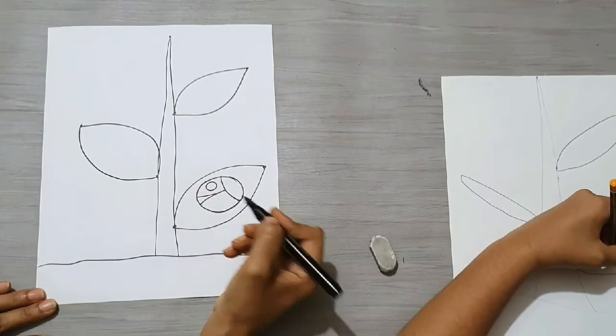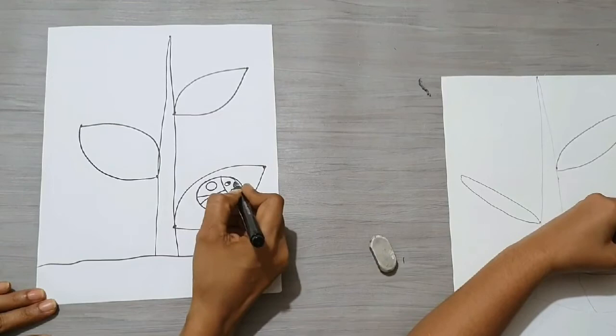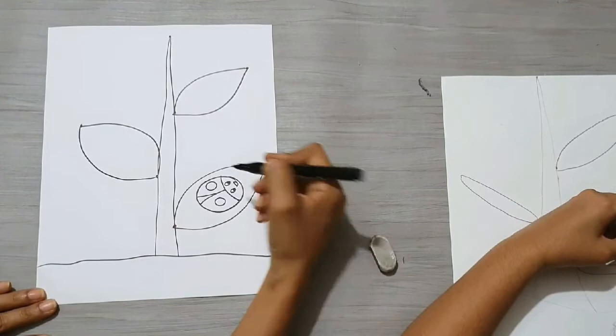Now draw the dots. I'm going to draw one over here and one over here. Next, draw the eyes. And then the tiny legs, followed by the legs.